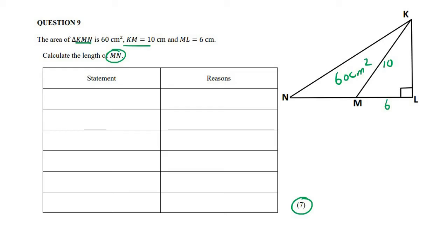Calculate the length of MN. Right, so we know that the area of a triangle is half base times height, but we need to speak about what is a base and what is a height. So let's say you have a triangle that looks like this.